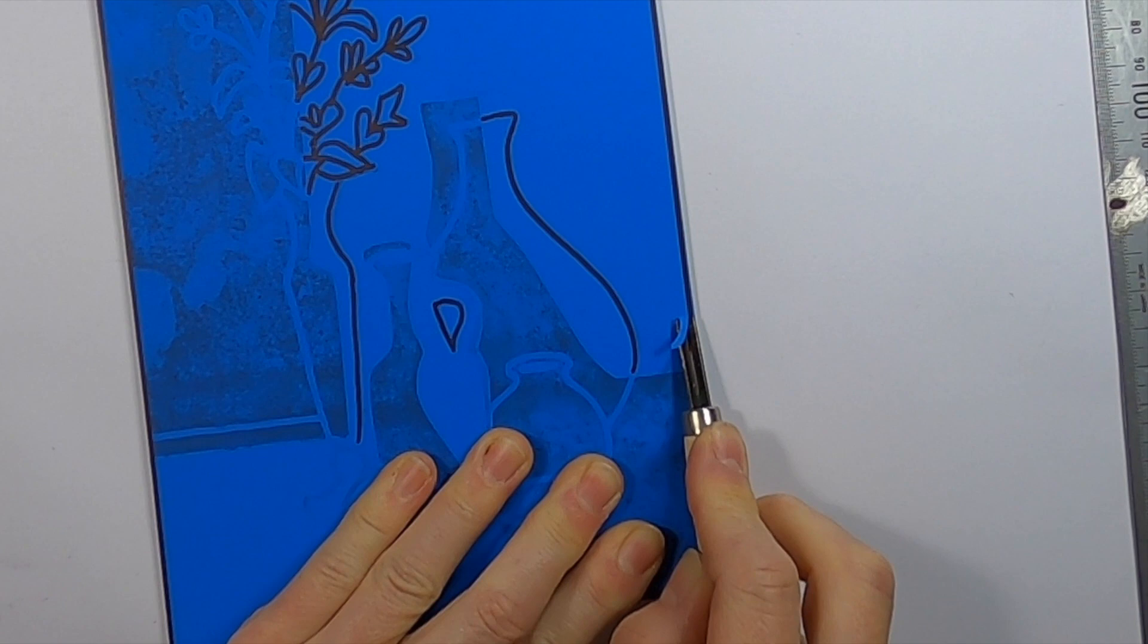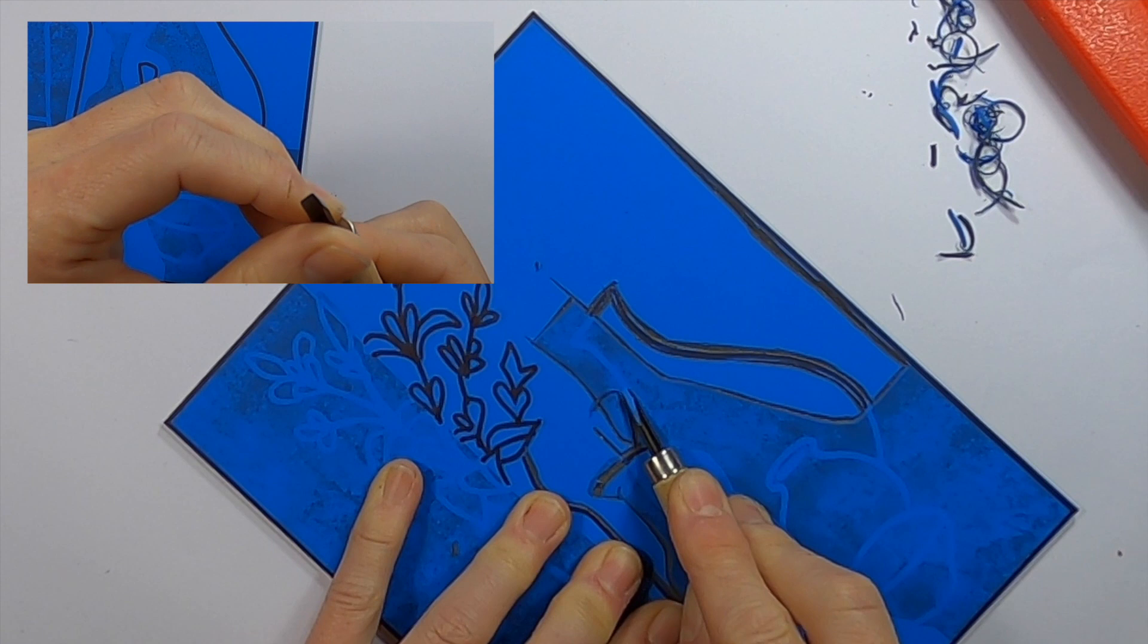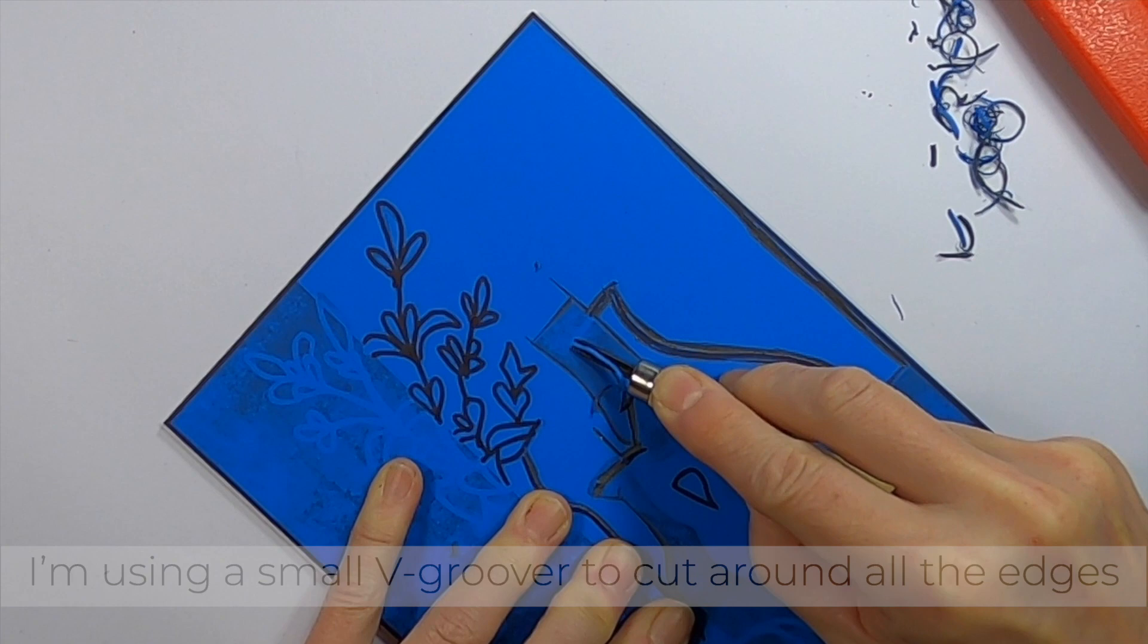Lino tools come in a few different tip shapes and sizes. I like to use a small v-groover to cut lines around the shapes before I go in with a larger tool. I find this gives you a neater edge to work to.